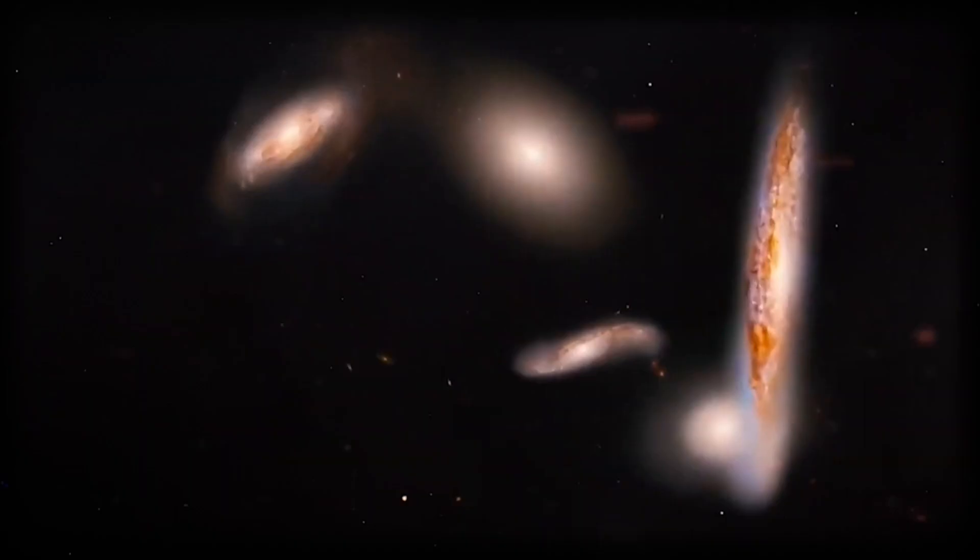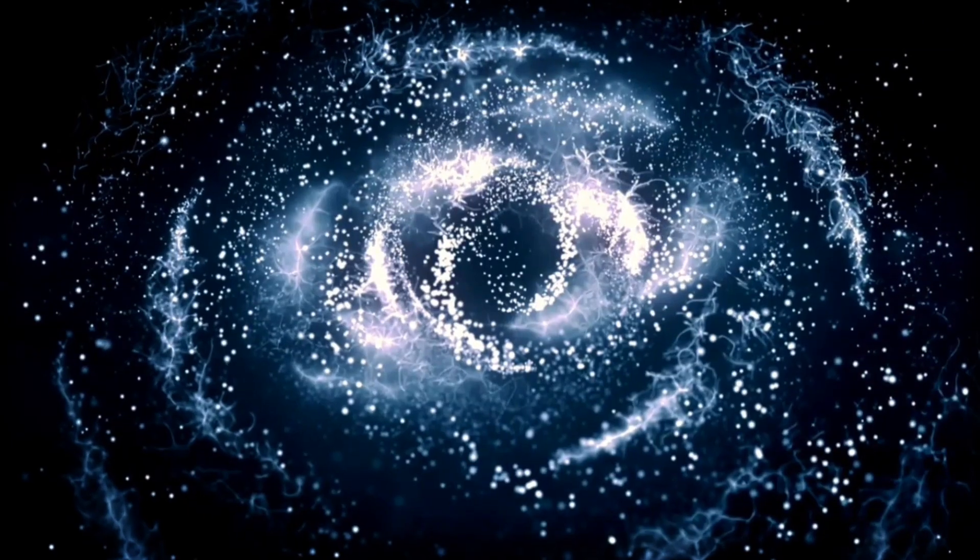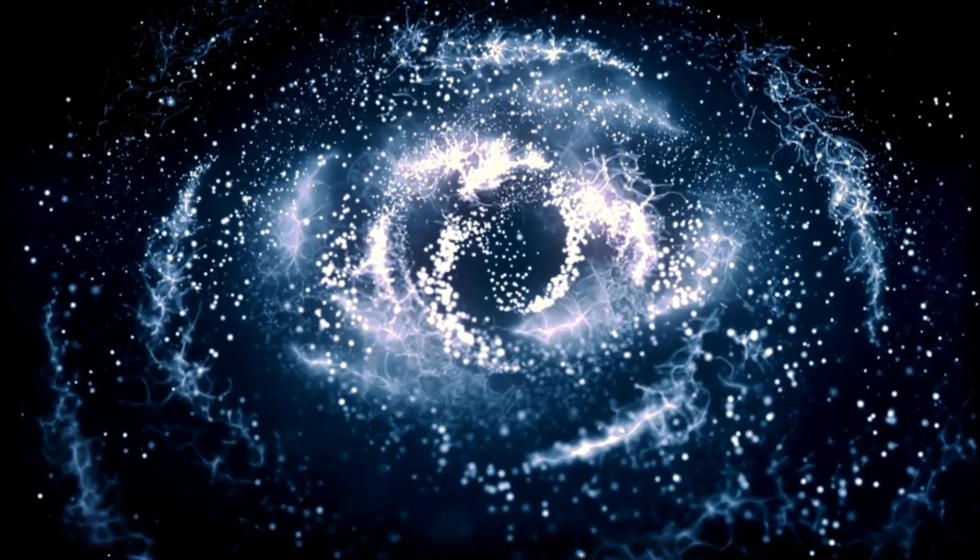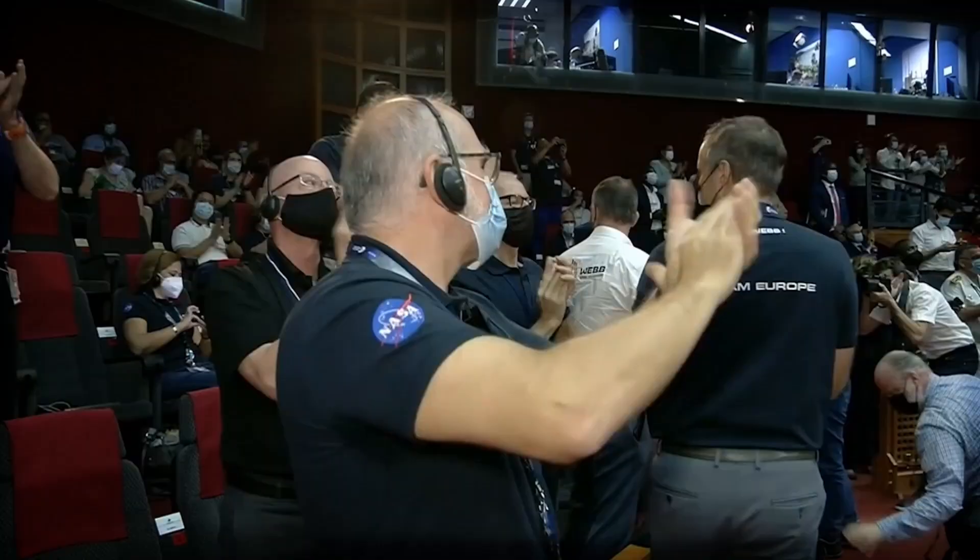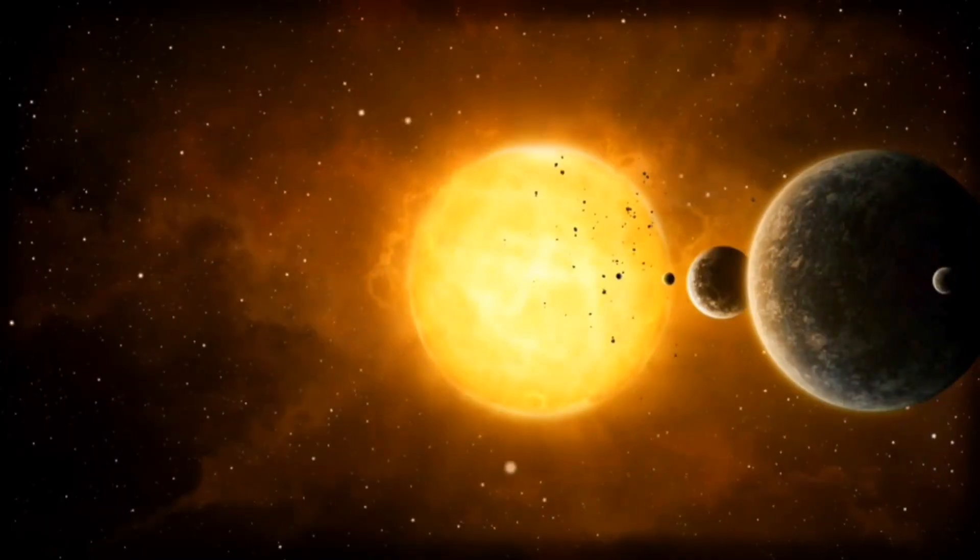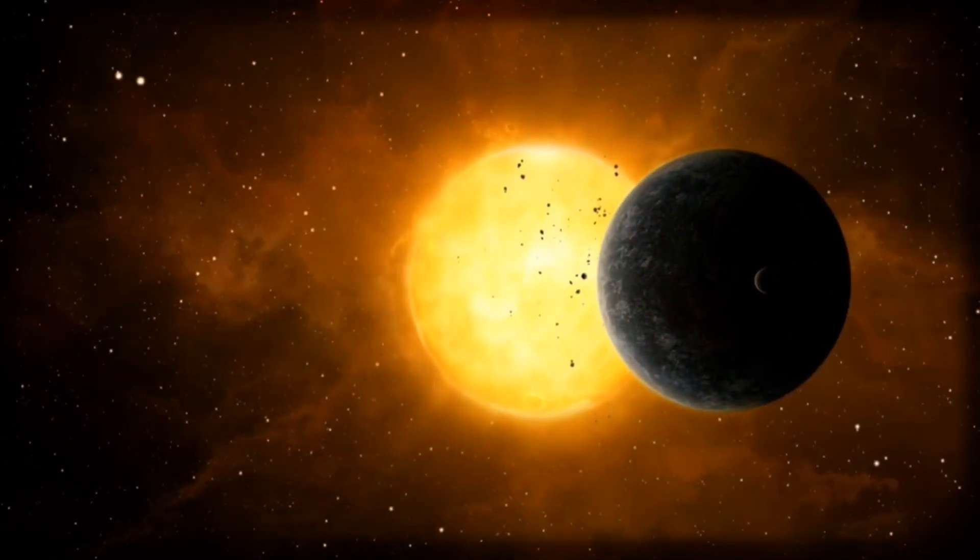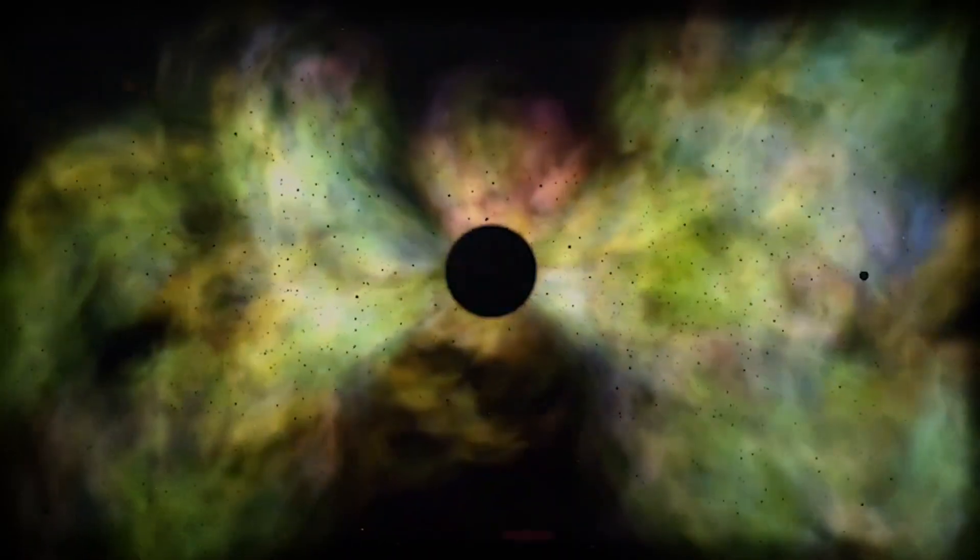Webb spotted thousands of bright, early galaxies, some shockingly similar to our own Milky Way. That discovery stunned astronomers. Why? Because these galaxies were too big and too bright to have formed so early.